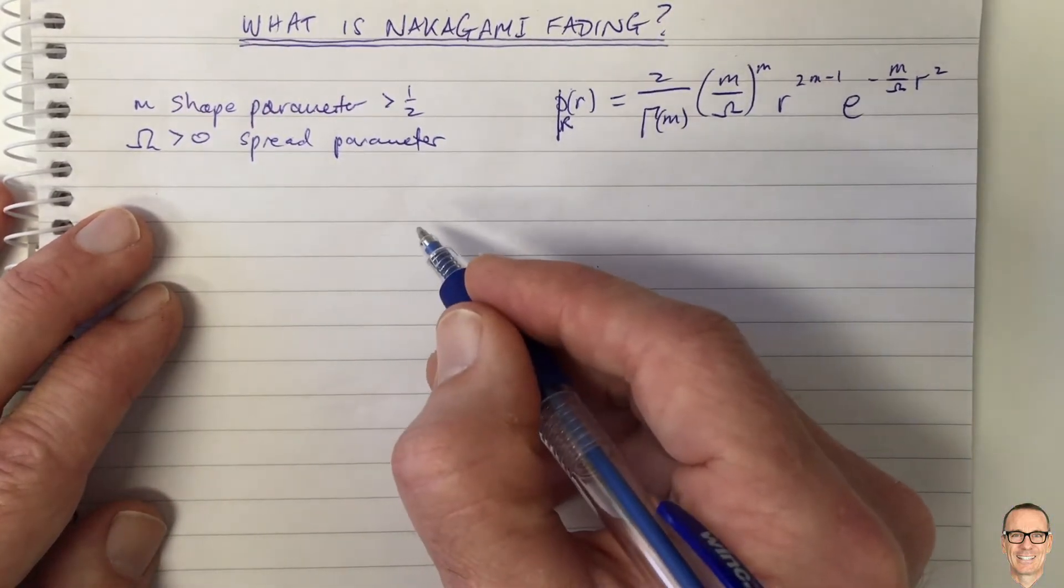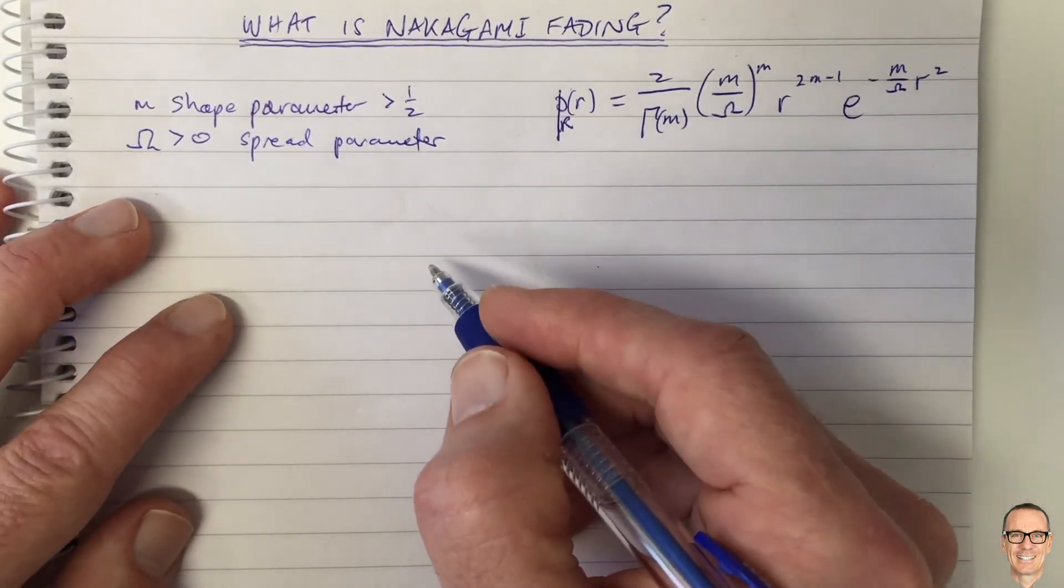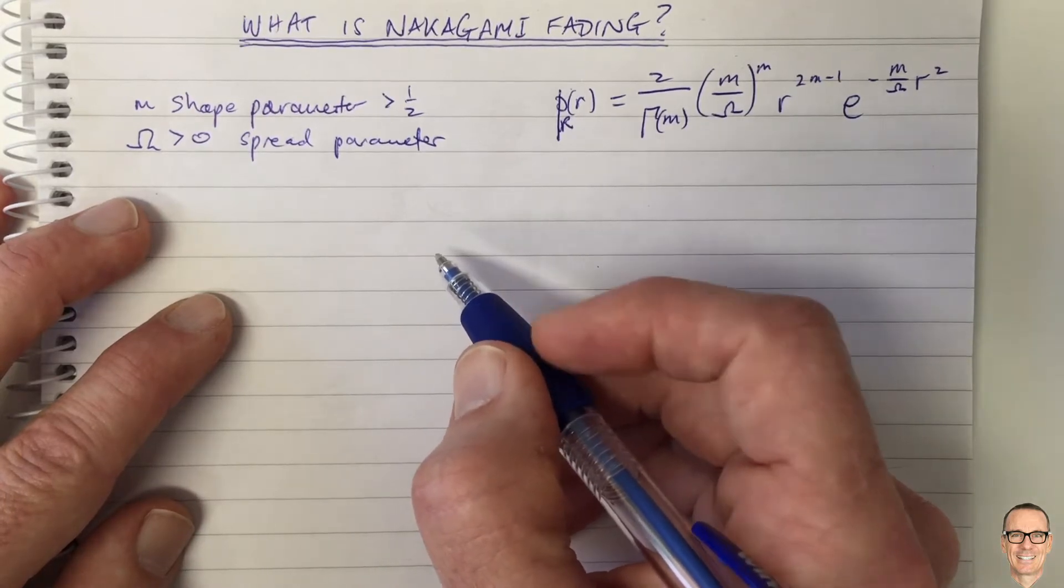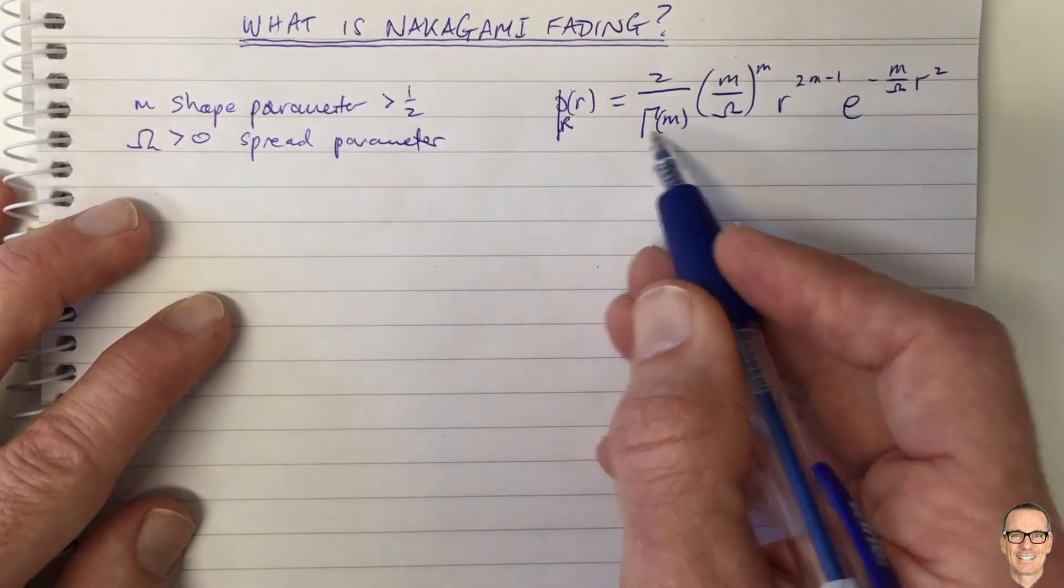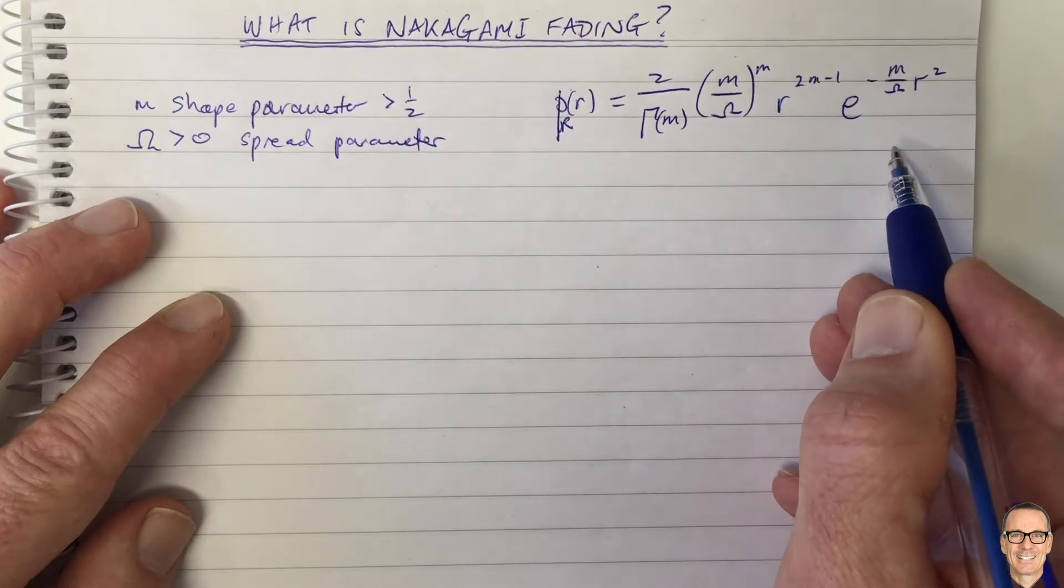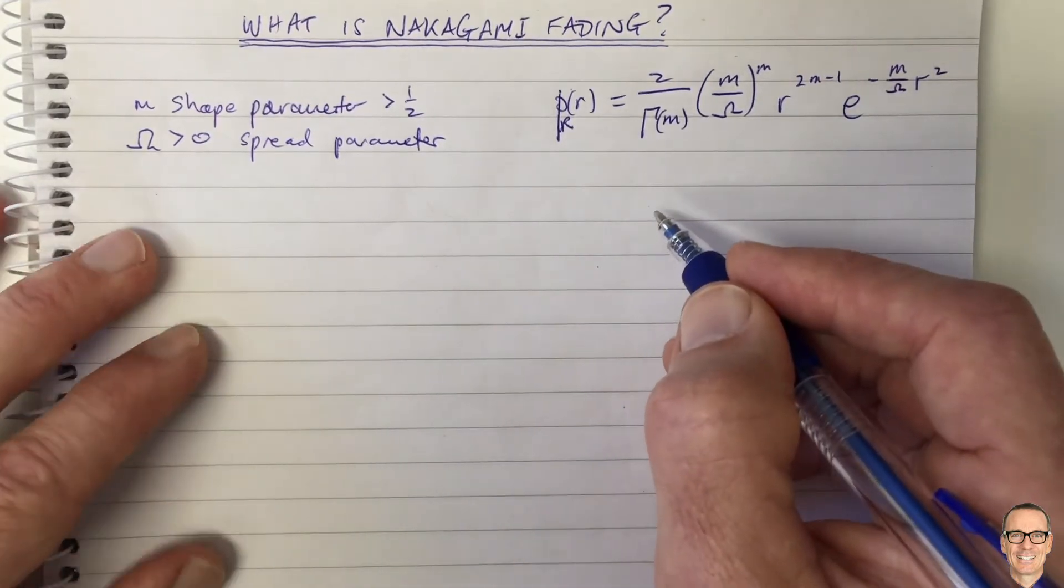So there are other models, the Rayleigh model and the Ricean model, and you can see the links below this video for videos on those two other fading models. The Nakagami is simply another model which has been found in practice to match up very well with measurements of signals in certain scenarios, particularly in indoor scenarios.